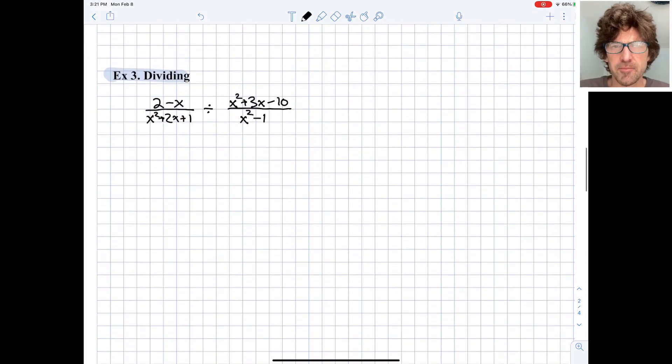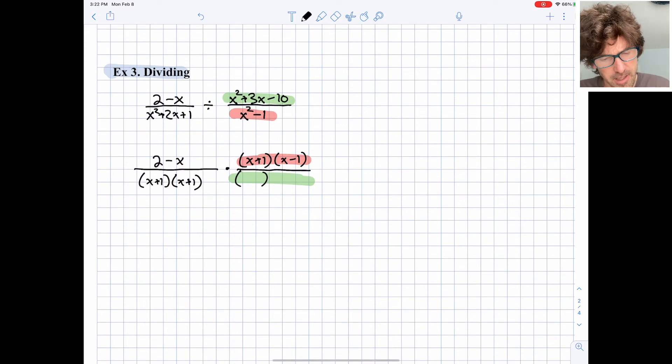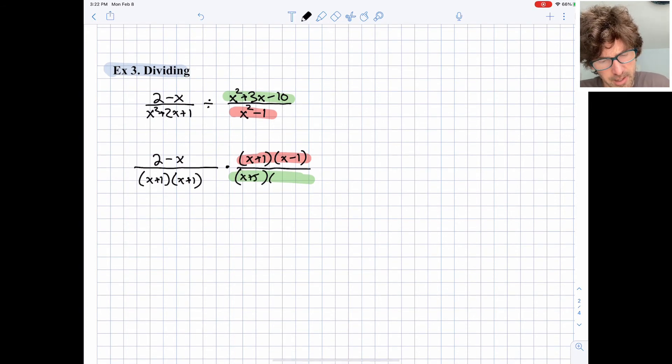Dividing virtually the same, we just need to remember to invert that second fraction and then follow the multiplication process. So I'll do a couple steps here. I'll factor the first fraction. That's x plus 1, x plus 1. I'll invert the second fraction and factor. That's a difference of two squares, x plus 1, x minus 1. Just to be clear, this turned into that. And then this is turning into that. So we're inverting that fraction and factoring at the same time: x plus 5 and x minus 2.